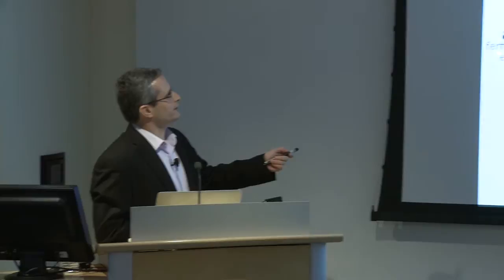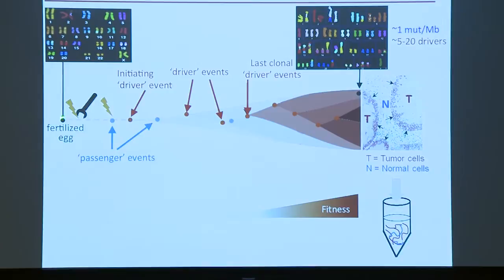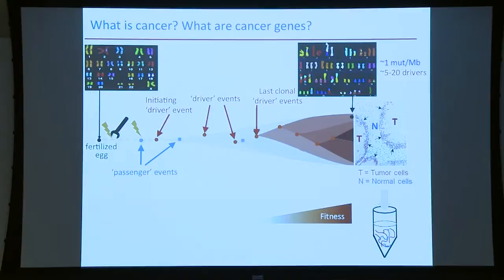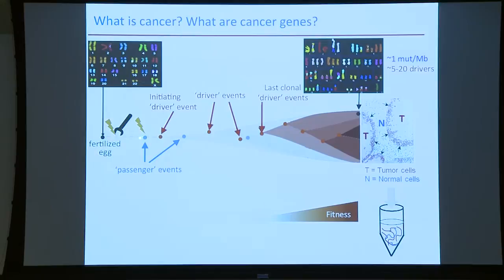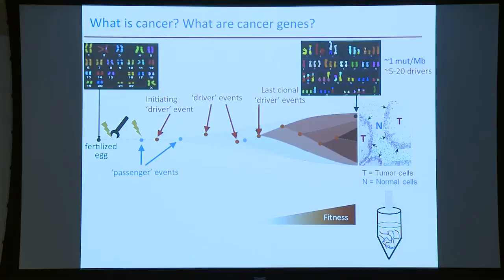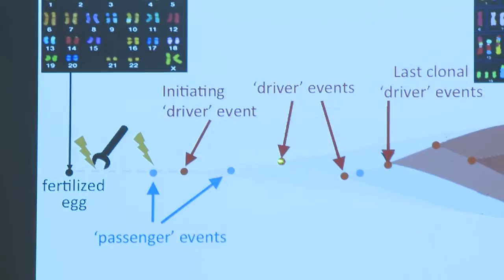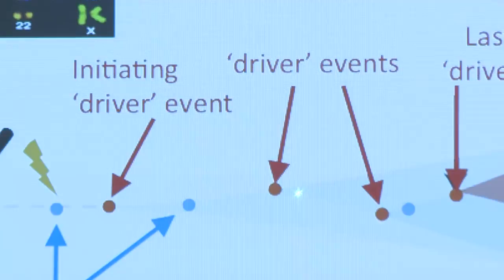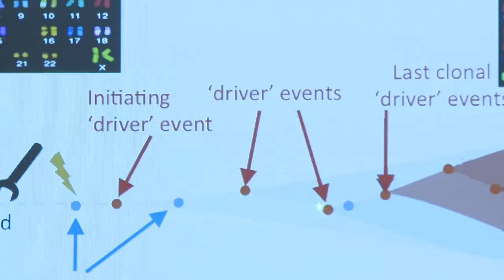We all start from a fertilized egg. As cells divide, they accumulate mutations. Many of them are corrected by repair mechanisms, but some stay in the genome. Typically they don't do anything — maybe they are slightly deleterious — these are passenger events. Then at some point in life, there could be a first driver event that gives a fitness advantage to those cells and they start to divide faster and grow a clone. They continue to accumulate passenger events, and then maybe one of those cells gets another driver event and gets an even bigger fitness advantage, growing even faster and starting to take over the population of cells. There are many, many passenger events on the way.